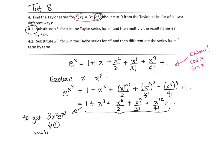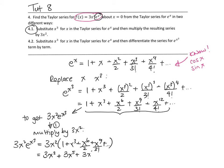We're going to multiply by 3x². So we get 3x²e^(x³) = 3x²(1 + x³ + x⁶/2 + x⁹/3! + ...). If we simplify that, we get 3x² + 3x⁵ + 3x⁸/2 + 3x¹¹/3!.